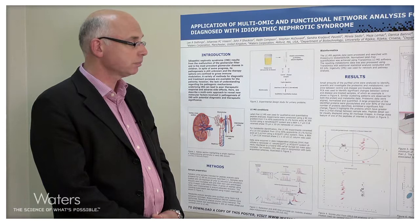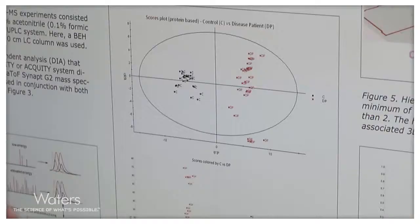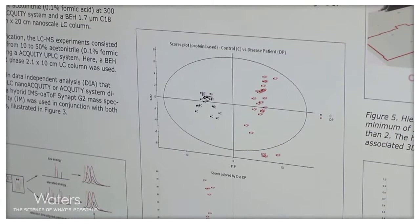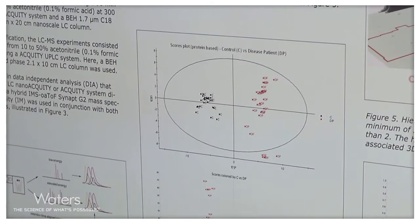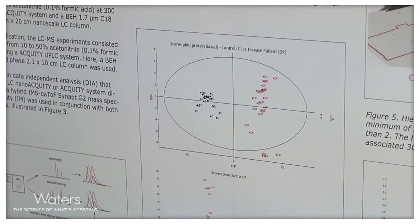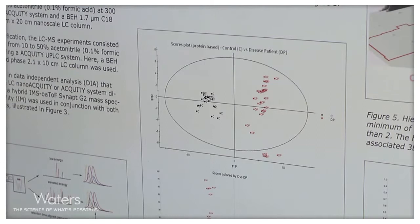In terms of the results, as shown in Figure 4, it shows the scores plots from OPLS-DA analysis of the disease-related samples compared to the controls — these are urine samples. The protein-based scores plot on the top clearly differentiates the disease patients from the controls, with disease patients in red and controls in black. In the bottom plot, the metabolites also clearly differentiate the two groups. Changes at both the protein and metabolite level clearly allow us to differentiate these samples from one another.